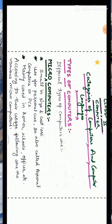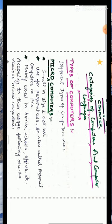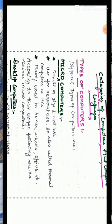On the basis of their size, speed, storage capacity and cost, computers can be categorized into different types. The first type of computers is microcomputers.